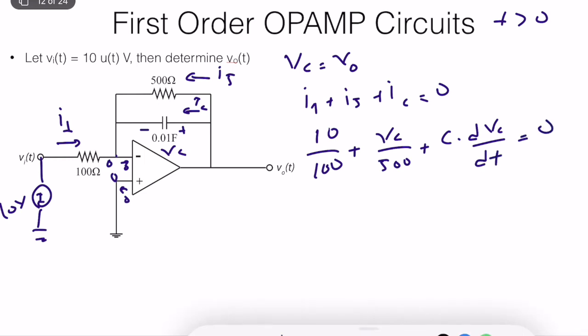What is C? C is equal to... I will write it later. So that's the differential equation. Let's make it a little bit cleaner. So dVc over dt plus Vc, this is RC, let's call it R5 times C. That's good.